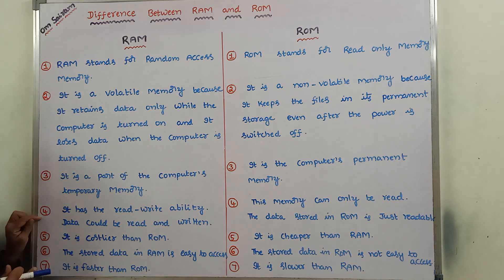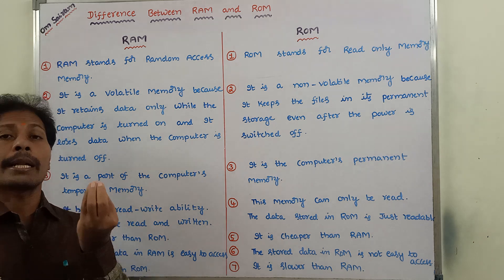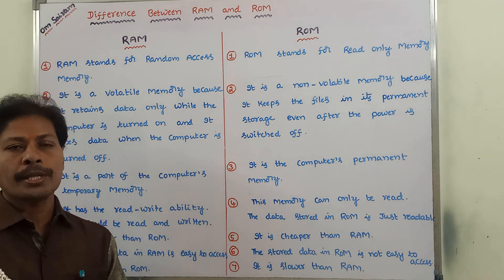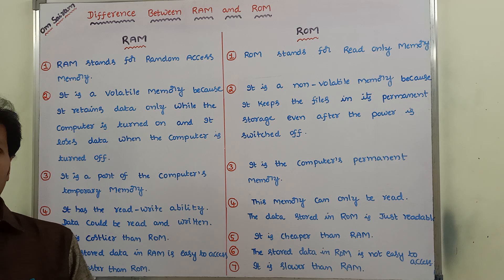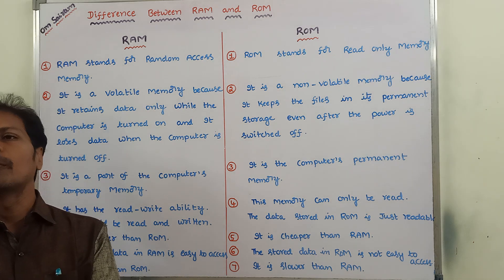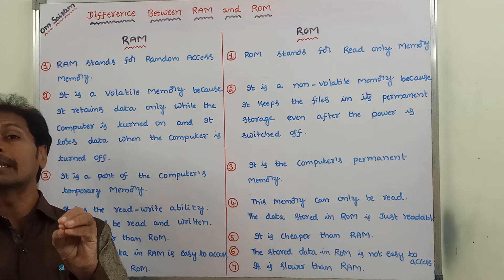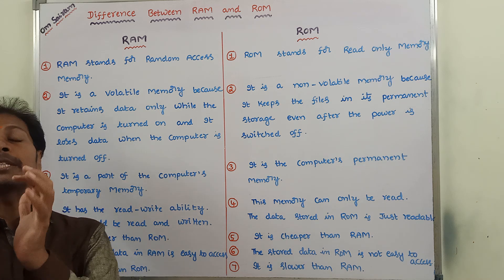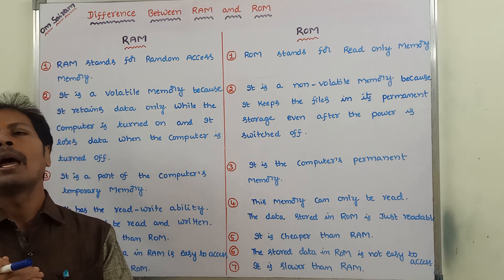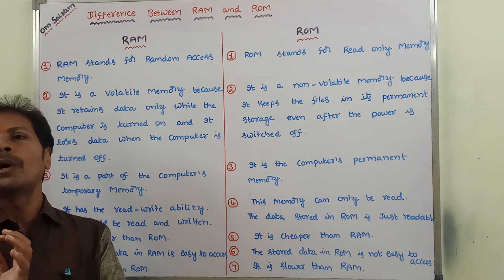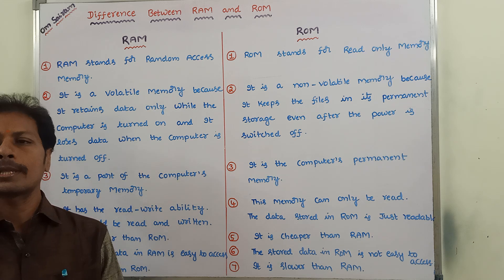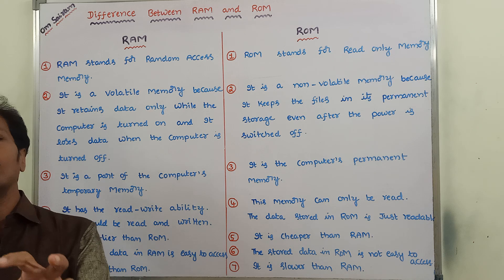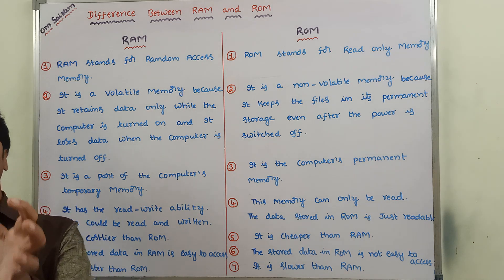Next point: on RAM, we have to perform two operations — Read Operation and Write Operation. The data within the RAM can be read by the users, and new data can also be written into the RAM. Hence, we can say that on RAM, both Read and Write operations are possible.